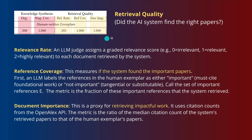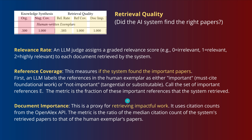The second dimension is retrieval quality — simply put, did the AI system find the right papers on arXiv for my topic? Here we have three indicators: the relevance rate, the reference coverage — whether the system found the really important papers — and we can also measure how impactful those papers are with an impact score using citation counts from a specific API.